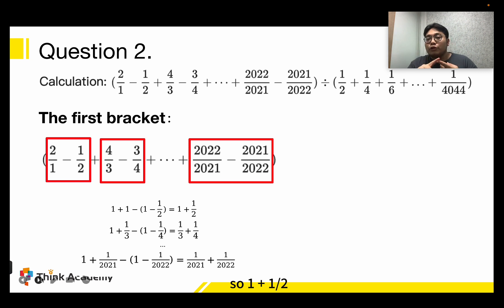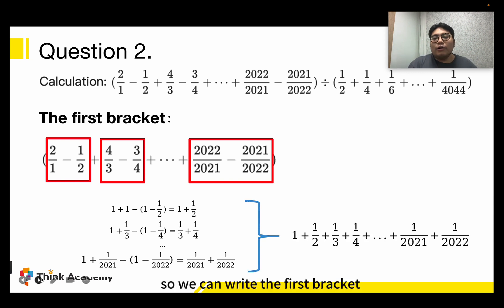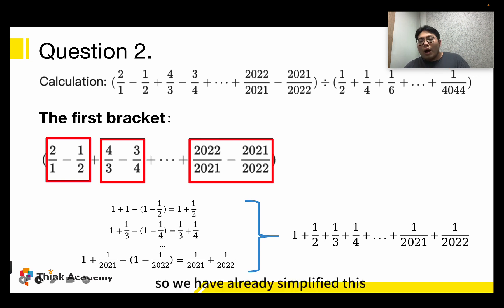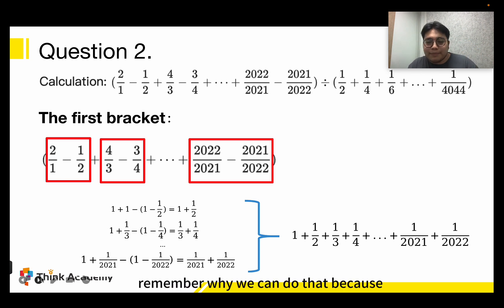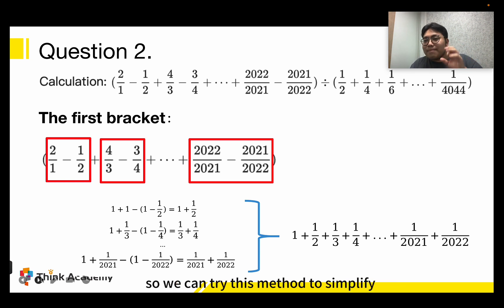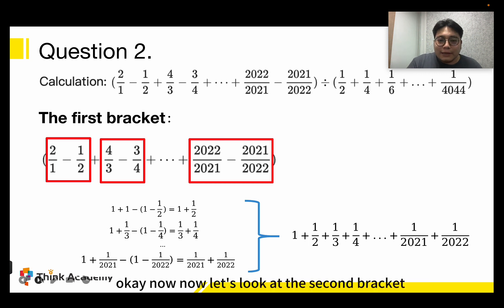You may have already found the pattern: the result is 1 plus 1/2 plus 1/3 plus 1/4, and so on, up to 1 over 2021 plus 1 over 2022. So we can conclude that the first bracket simplifies to 1 + 1/2 + 1/3 + 1/4 + ... + 1/2022. We can do this because the numerator and denominator of each fraction are very close — the difference is only 1.